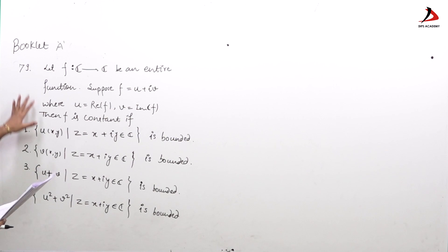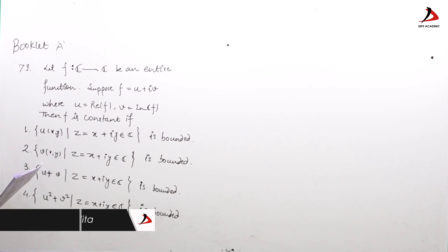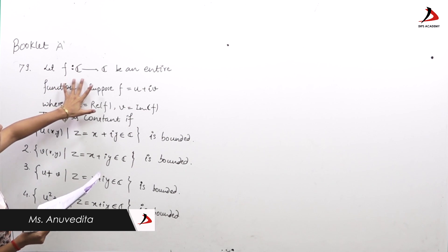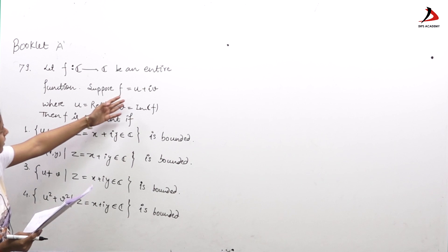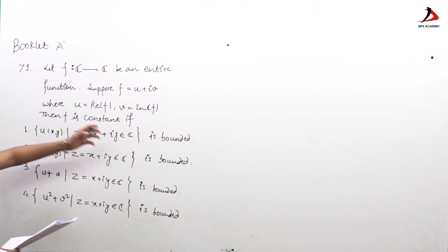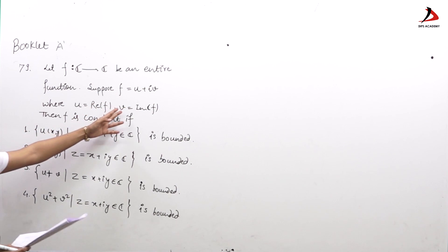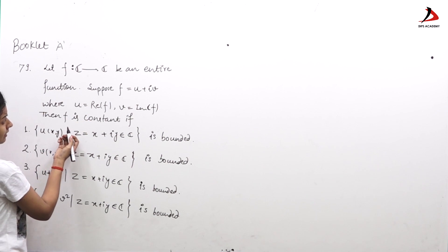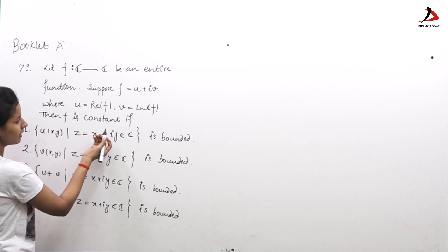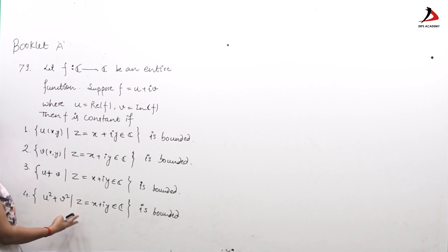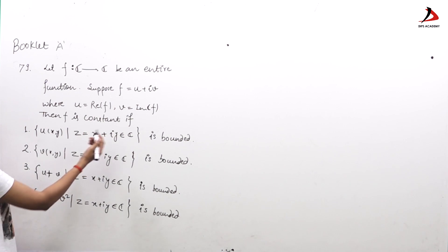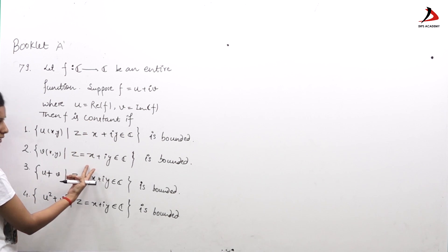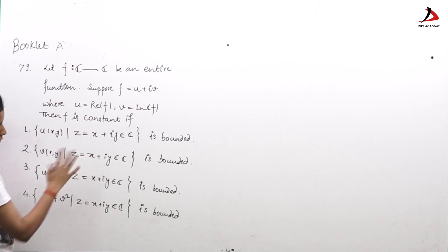Question number 79 from booklet A: a function is given from ℂ to ℂ, that is entire. f is u plus iv, where u is the real part of f and v is the imaginary part of f. The question asks: f is constant if which of the following conditions is satisfied? We need to check each option.